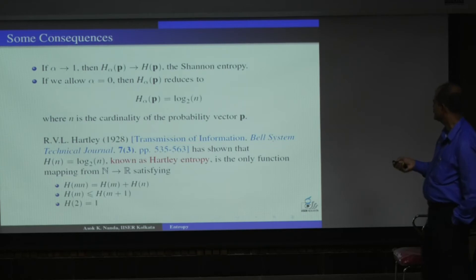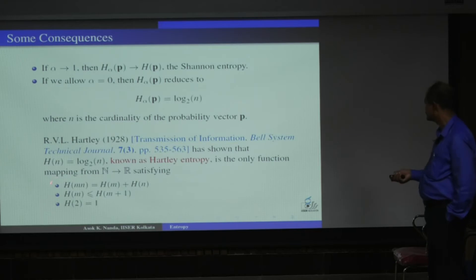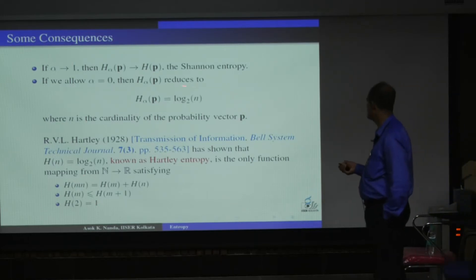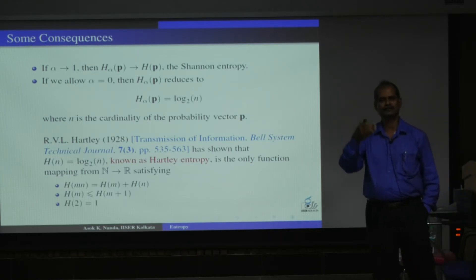Now in 1928, long before 1948, Hartley got this kind of thing. This is another kind of entropy. If you see that this Hartley entropy is a function mapping from N to R, which satisfies this kind of thing, these three postulates. This is the function which will give you H(P) equal to log N. So what I am trying to tell is, whatever entropy we see here, behind that, there are a set of postulates.